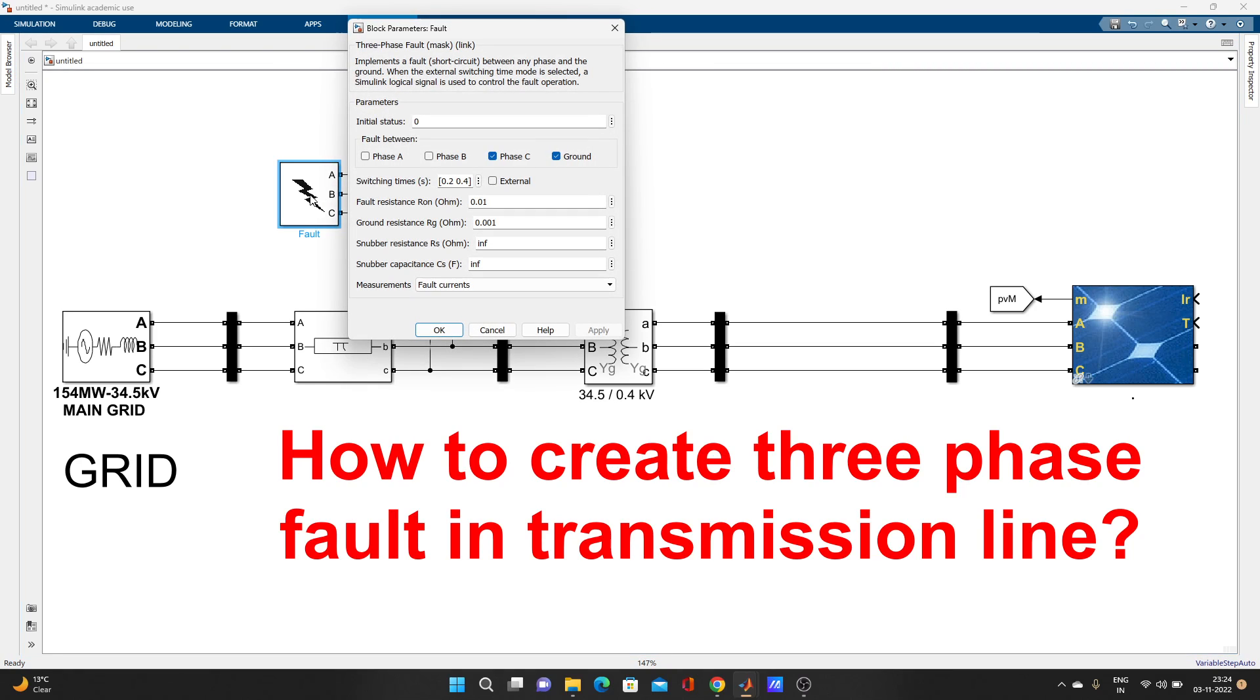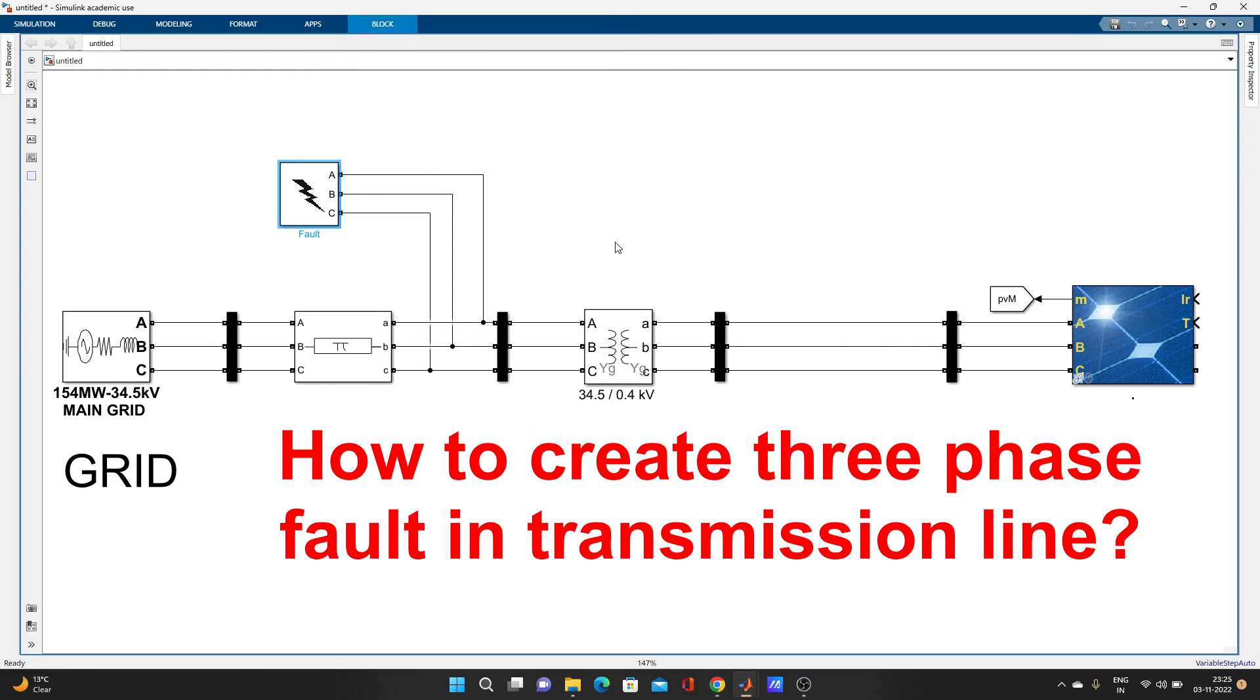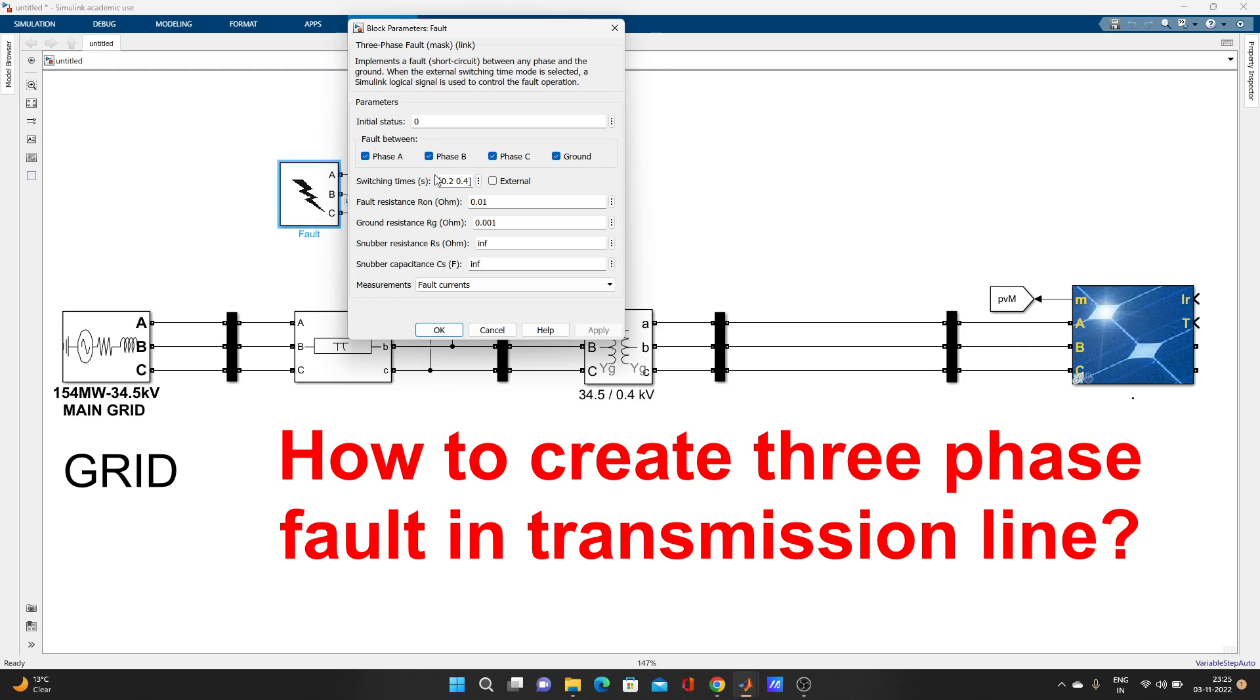And just double click here. In three-phase fault, you can create so many types of fault: phase A to phase B means line to line fault, line to ground fault, double line to ground fault. You just need to click on it, then it will be the fault. If you click ABCG, suppose here already ABCG is clicked, so that means this is a three-phase fault. The fault type is ABCG fault, which means three line to ground fault.